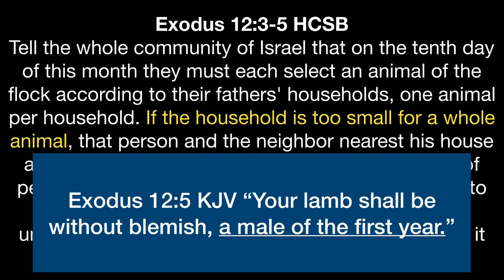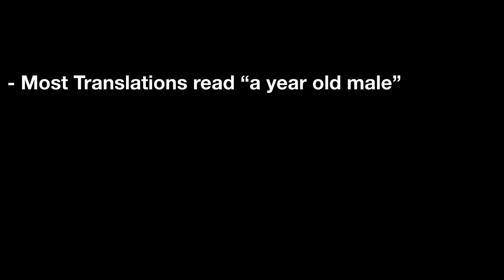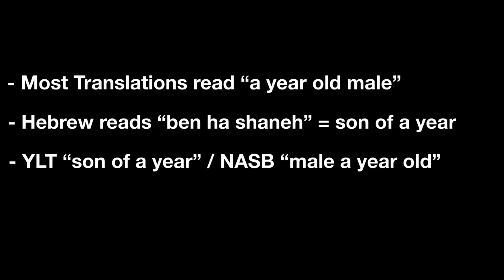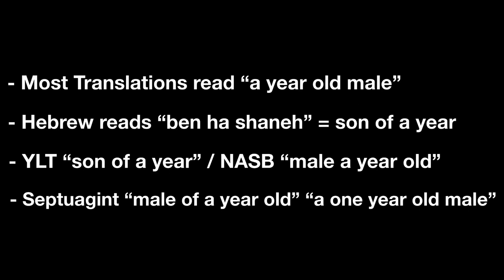Secondarily, the King James and a few other translations say 'a male of the first year,' but most translations say 'a year-old male.' The Hebrew here reads Ben HaShaneh, which literally means 'son of a year.' Young's Literal Translation translates it as 'son of a year,' and the literal New American Standard Bible says 'male a year old.' The Septuagint, the oldest known complete Old Testament dating to around 250 B.C., reads 'male of a year old' or 'a one-year-old male.'